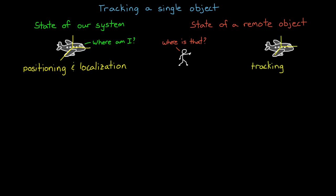Figuring out where another object is isn't all that different from figuring out where you are. We're simply trying to determine state, like position or velocity, by fusing together the results from sensors and models.